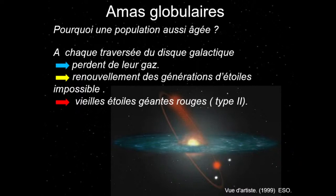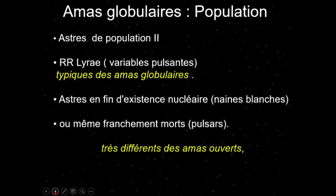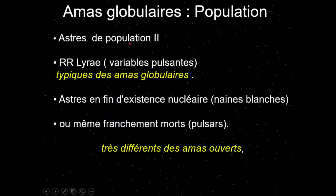Qu'est-ce qu'on trouve essentiellement dans les amas globulaires ? Des astres de population 2 : des étoiles rouges, des RR Lyrae (variables pulsantes typiques des amas globulaires), des naines blanches, et probablement pour les vestiges des étoiles les plus lourdes, des étoiles à neutrons et quelques pulsars. C'est très différent des amas ouverts comme les Pléiades, qui eux contiennent plein de gaz visible partout. On peut aussi faire le diagramme HR des amas ouverts, qui donne des informations très intéressantes.